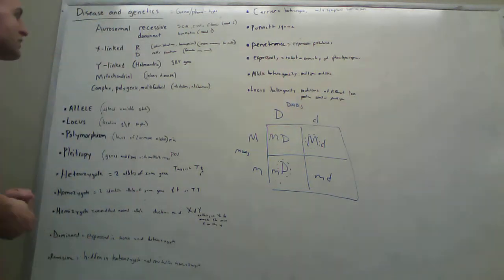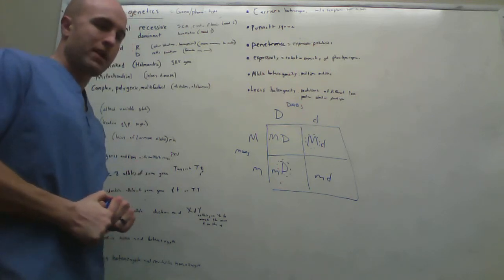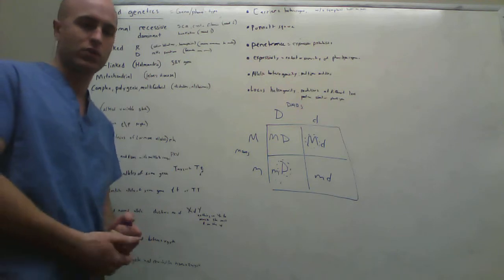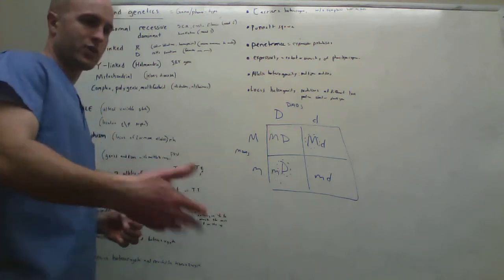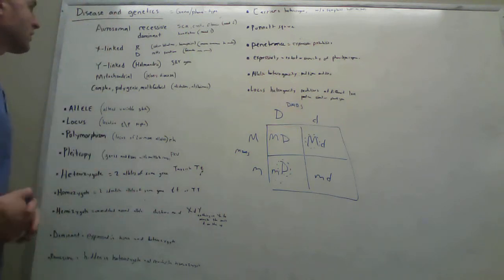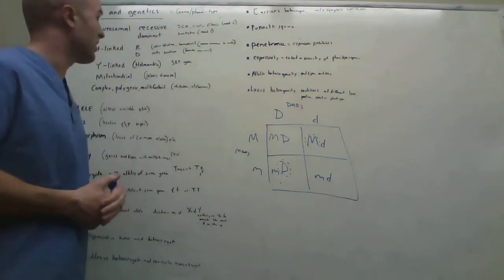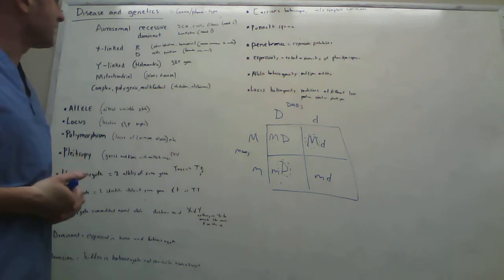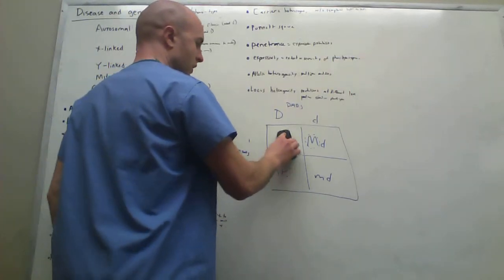So first of all, autosomal recessive or dominant. If I remember correctly, autosomes are basically all of your chromosomes that are not sex chromosomes. So you have 44 autosomes or 22 pairs of autosomes. And then you have two sex chromosomes, an X and a Y or an XX. Typically, if a person has autosomal recessive, and some of the examples here are SCA and cystic fibrosis. If a person's going to get this disease, let's go ahead and show what this would look like on a Punnett square.